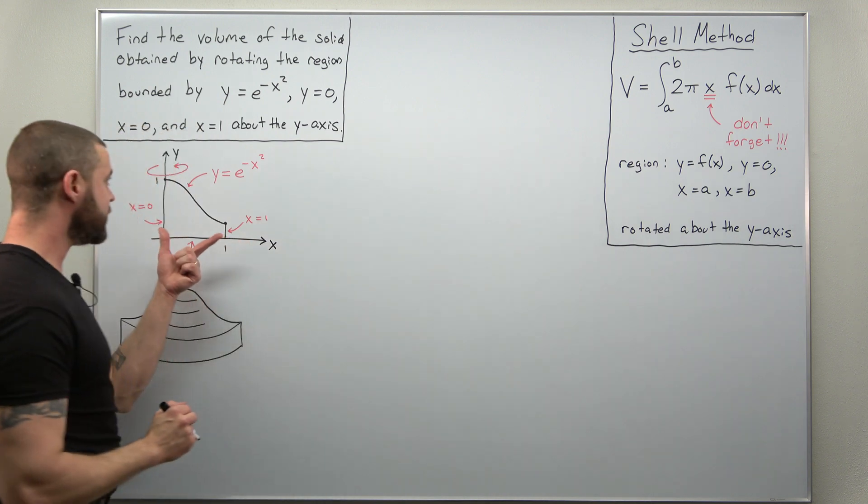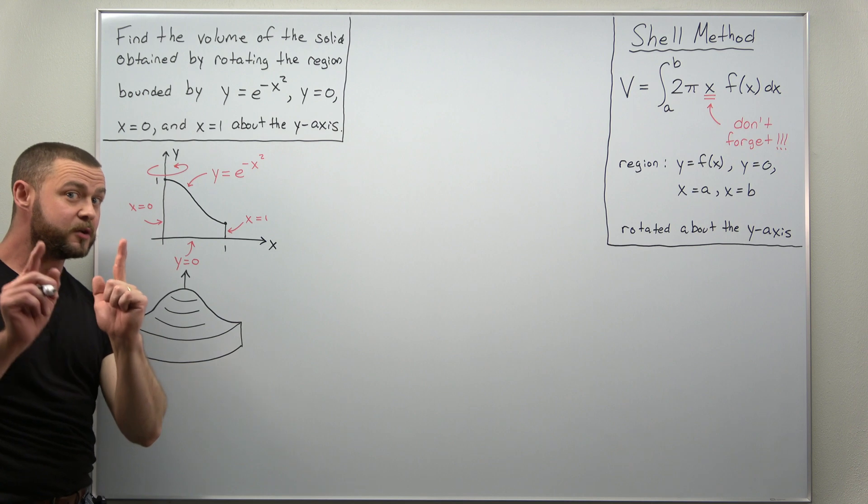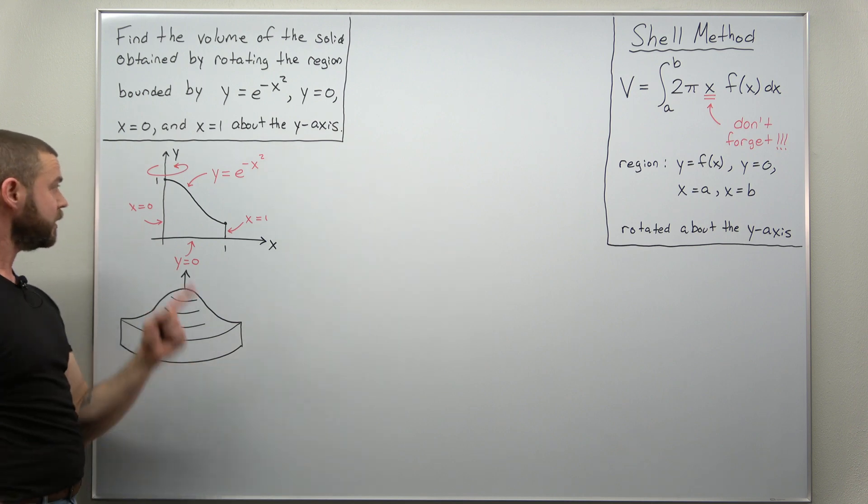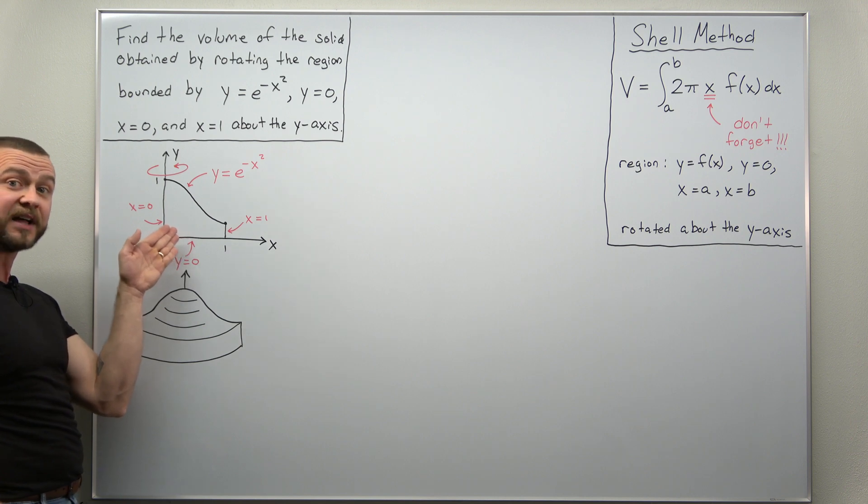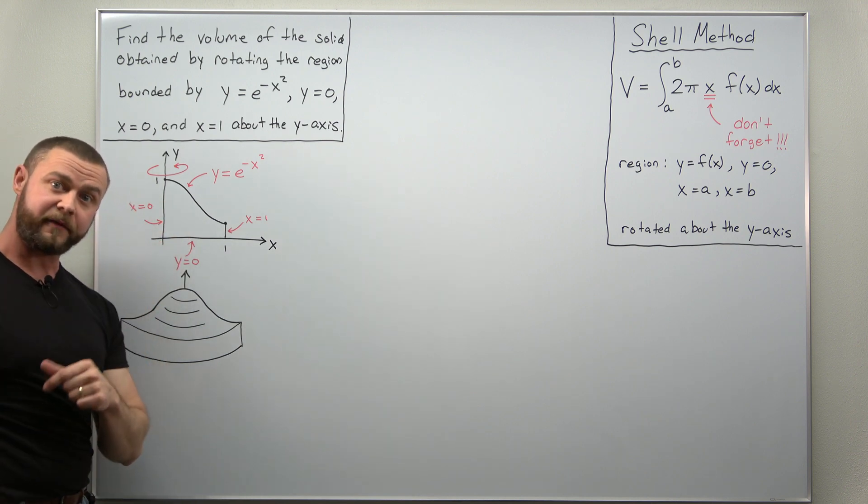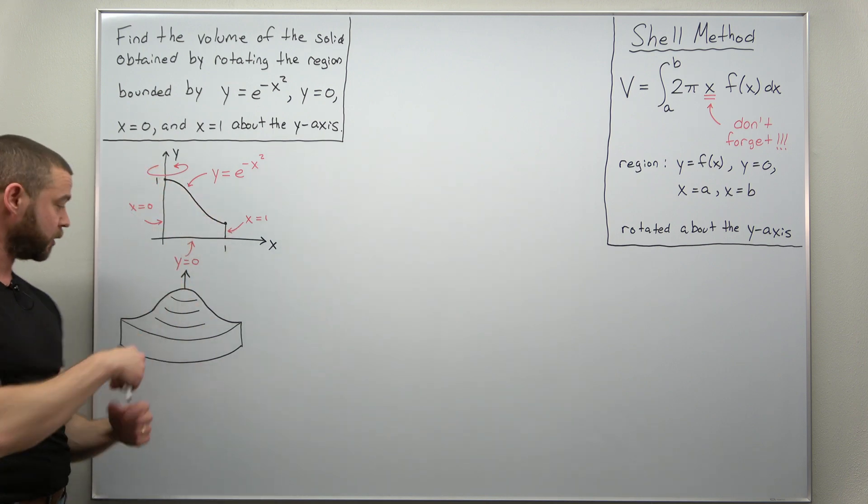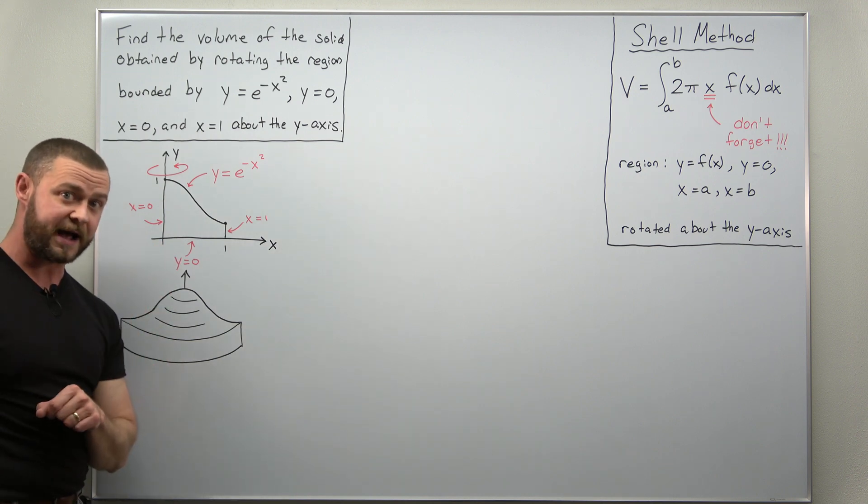We have our region here, the graph of y equals e to the negative x squared, which is related to the normal distribution, and we're rotating that region beneath that graph down to the x-axis about the y-axis. And if you do that you get a solid that looks something like this, it's kind of bumped up in the middle and it's rotationally symmetric about the y-axis.